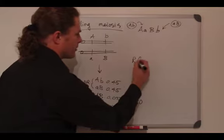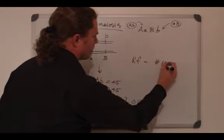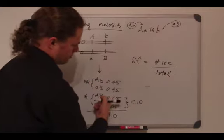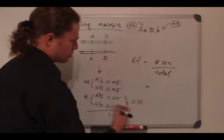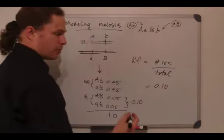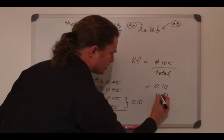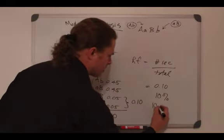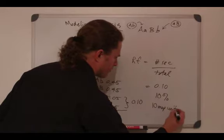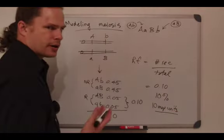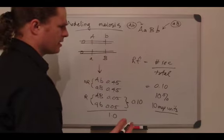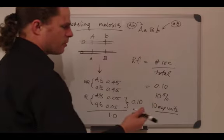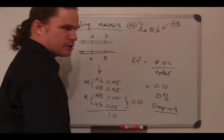The recombinant frequency is calculated as the number of recombinants out of the total — in this case, 0.05 plus 0.05 out of a total of 1, equaling 0.10 or 10%. We would say this is 10 map units. Map units are a somewhat arbitrary unit of measurement; they masquerade as a physical distance when in fact they simply represent recombination frequency.